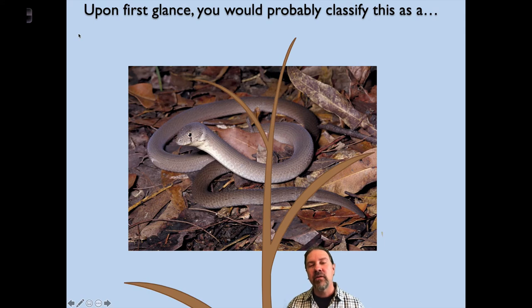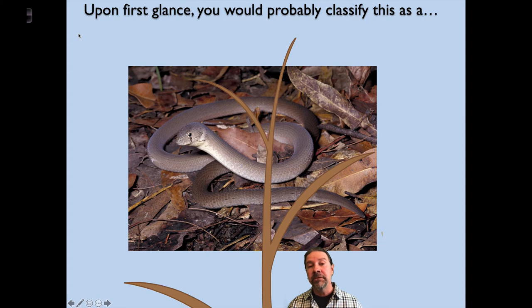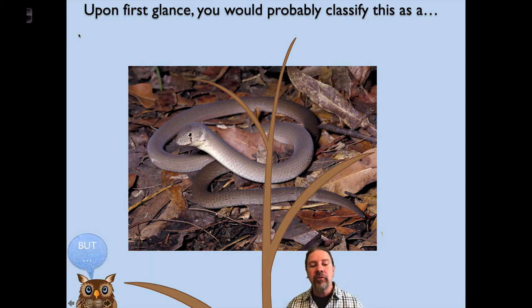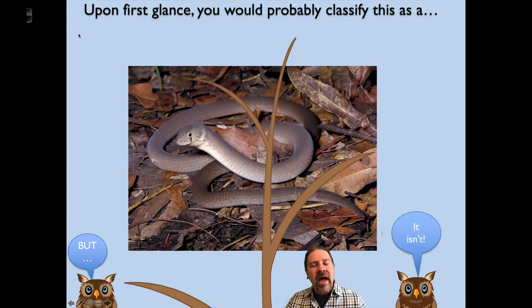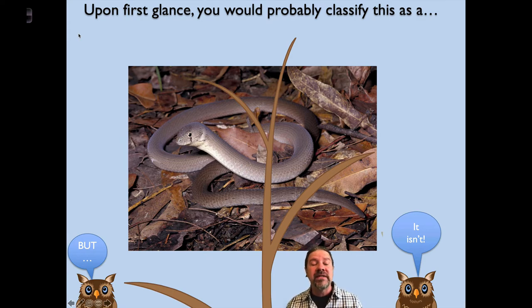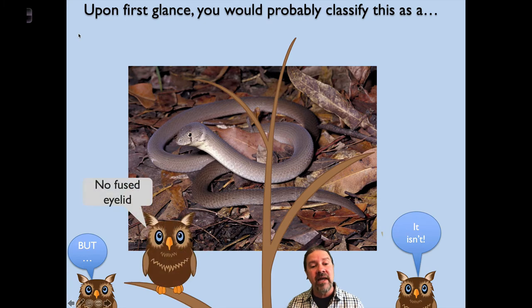Let's take a look at this organism. Upon first glance, you would probably classify this as — go ahead, fill in the blank. Most of us are going to say snake, right? But there's a problem. This is not a snake. How is this not a snake? Well, we have to dive deeper. We got to look at the physical characteristics of this animal to determine exactly what it is if it's not a snake.